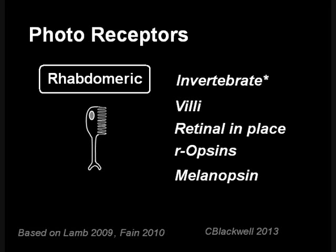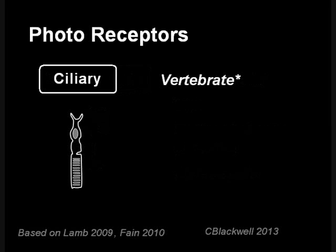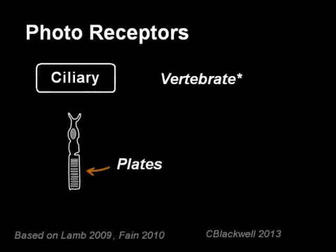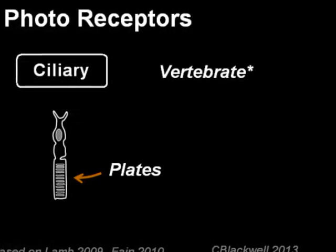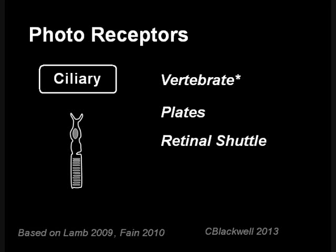The other photoreceptor line is called ciliary, because the outer segment is a modified cilium. This type is generally associated with vertebrate eyes — these are the rods and cones. It is different from the rhabdomeric series in the following ways. One, instead of villi, it presents more opsin by using multiple membrane folds or plates. Two, in order to recycle exposed retinal, it goes through a complex process where the used retinal molecule is shuttled to pigment cells, chemically changed back to the active cis form, and then shuttled back to the photoreceptor. Three, these ciliary photoreceptors use c-opsins, which are the ones we have been talking about in previous videos.